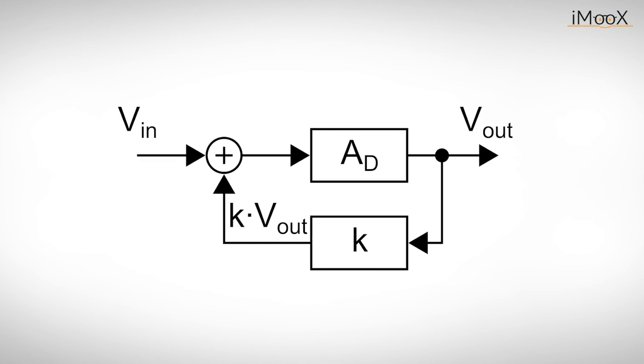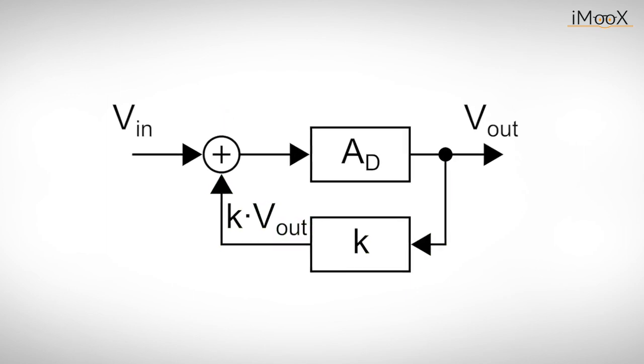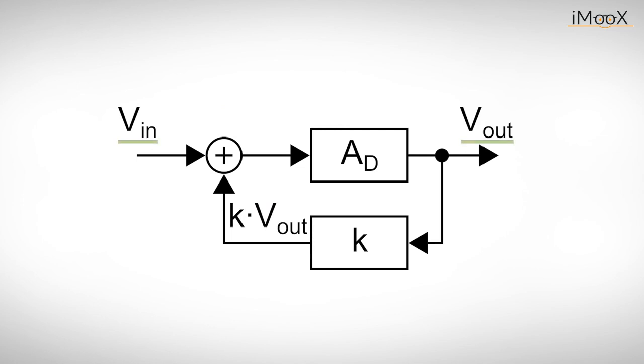Positive feedback means that a portion of the output voltage is added to the input voltage. To see what happens we consider a loop like this one. We assume that all voltages are zero volts. The differential gain AD is 2 and the feedback coefficient K is 1. So zero is added to zero and nothing is happening right now. But once we give the input voltage a light nudge, we trigger a chain reaction.